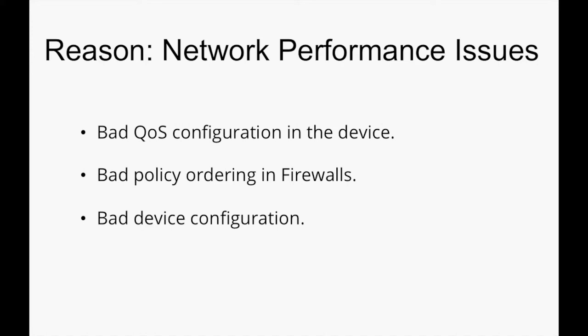Bad policy ordering in a firewall is one of the major causes of network issues in enterprises today. Policies might be configured properly but not ordered properly, so the ordering of policies is one of the major causes of such issues. Bad device configuration is also a major issue that has to be analyzed and fixed immediately.